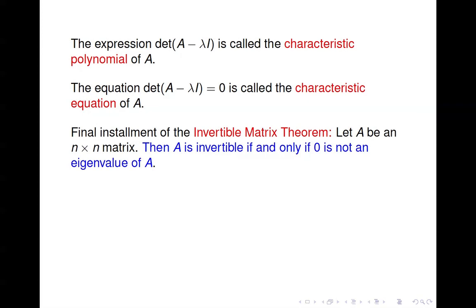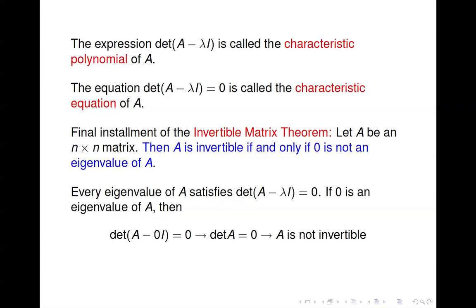We now have the final installment of the Invertible Matrix Theorem: if A is an n by n matrix, A is invertible if and only if 0 is not an eigenvalue of A. This is easy to see: every eigenvalue of A satisfies the characteristic equation, which is the determinant of A minus lambda I equals 0. So if 0 were an eigenvalue of A, we'd have the determinant of A minus 0 times I equal to 0 — but A minus 0 times I is just A. So the determinant of A would equal 0, meaning A is not invertible. Therefore, 0 cannot be an eigenvalue of A if A is invertible.